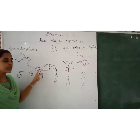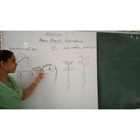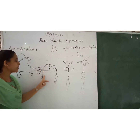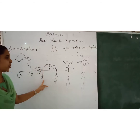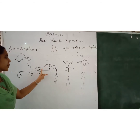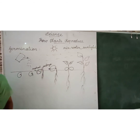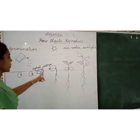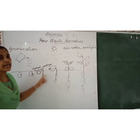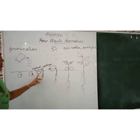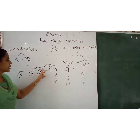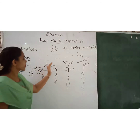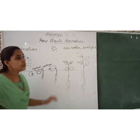Then the seed coat breaks and the embryo will start to grow. What is the meaning of embryo? Embryo means a small baby plant. After the seed coat breaks, the embryo will grow faster.